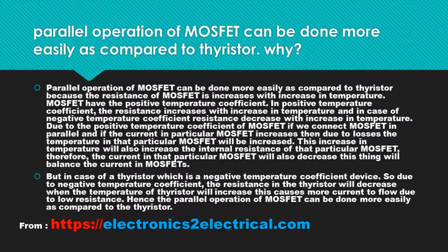In positive temperature coefficient, the resistance increases with increase in temperature, whereas in negative temperature coefficient, resistance decreases with increase in temperature. Due to the positive temperature coefficient of MOSFET, if we connect MOSFETs in parallel and the current in a particular MOSFET increases, then due to losses the temperature in that particular MOSFET will increase.